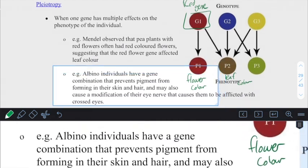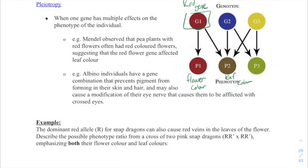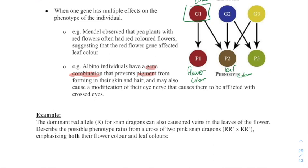And this happens also in human beings. So, for example, in albino individuals or individuals living with albinism, the true albinism can have an effect where the gene combination prevents pigment from forming in the skin and hair and also can cause modification of the eye nerve. So a single gene pair has effects on three different outcomes: hair, skin and eye nerve construction.